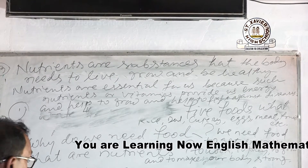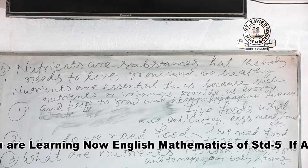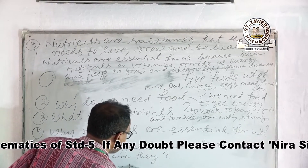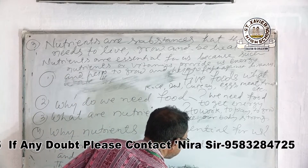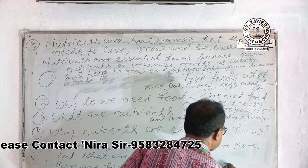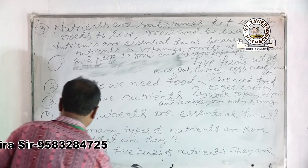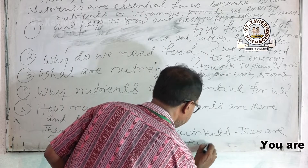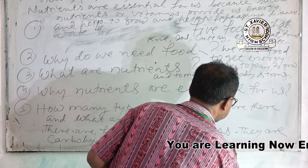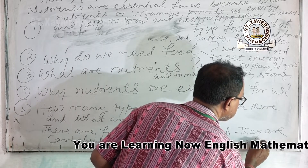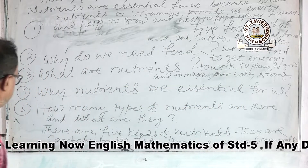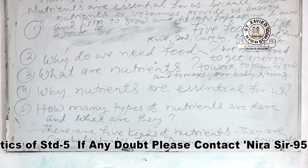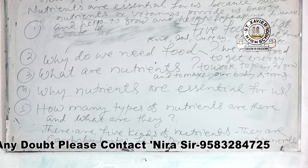The last question: how many types of nutrients are there and what are they? There are five main kinds of nutrients. They are: carbohydrates, fats, proteins, vitamins, and minerals.